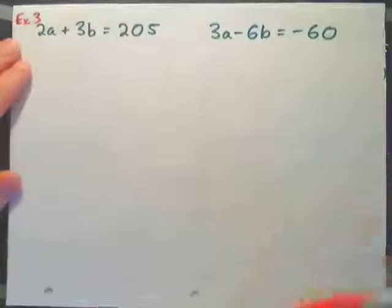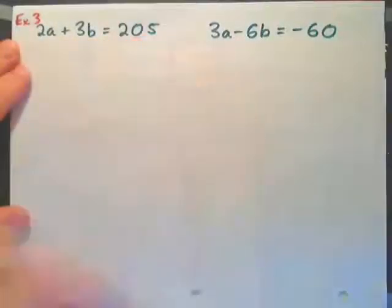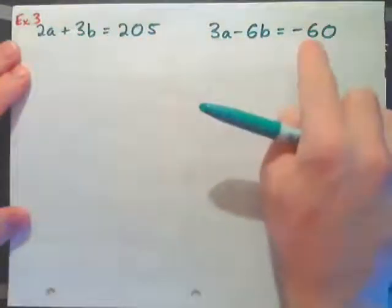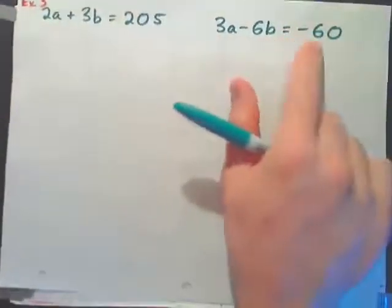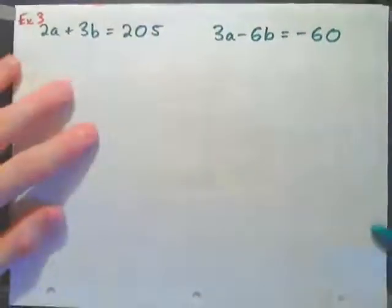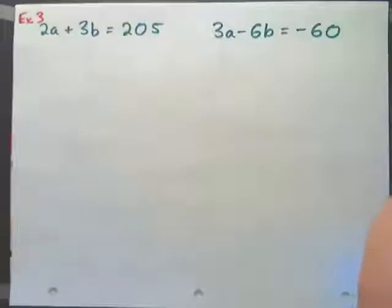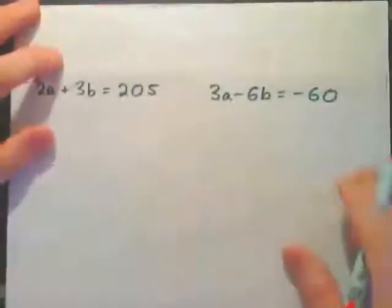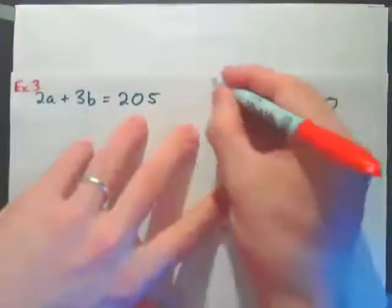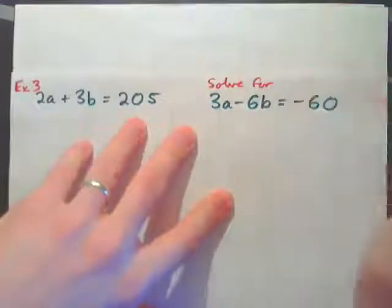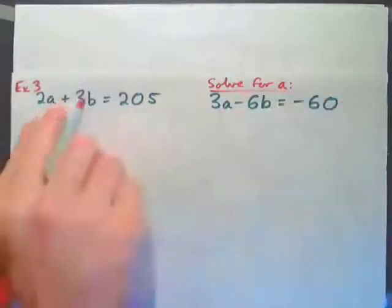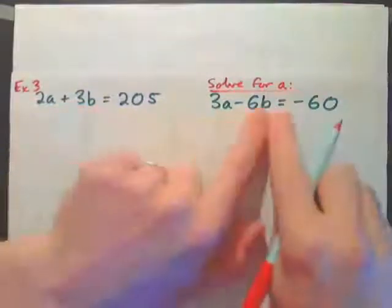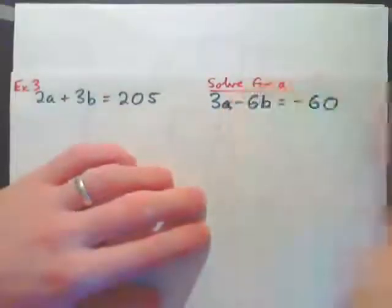Example 3: 2 apples plus 3 bananas cost 205 cents, and 3 apples minus 6 bananas cost negative 60 cents — meaning that transaction leaves you in debt by 60 cents. To substitute, we need to get one variable alone. A good approach is to take the second equation and solve for a.